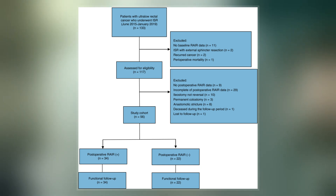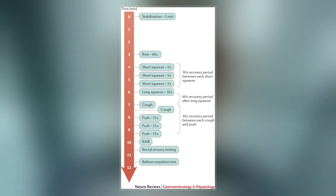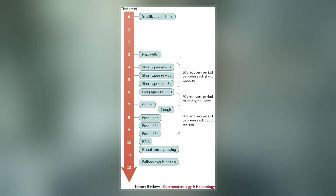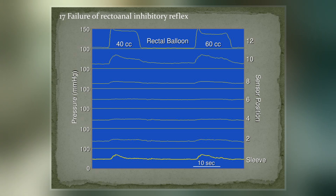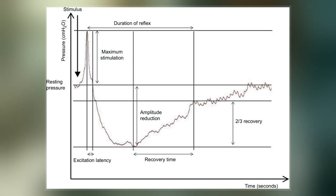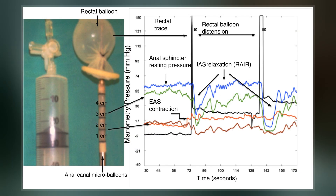Mediated by the autonomic nervous system, the afferent limb of this reflex depends upon an intact network of interstitial cells of Cajal in the internal anal sphincter. These cells, which are mediated at least in part by nitric oxide, provide inhibitory innervation of the internal anal sphincter. Impairment of this reflex can result in fecal incontinence.